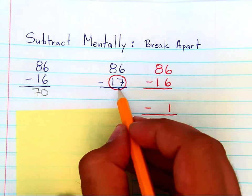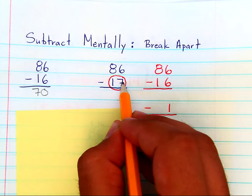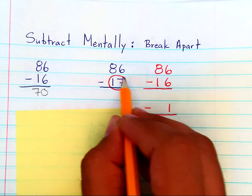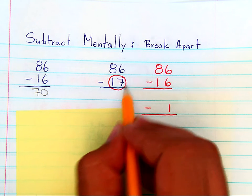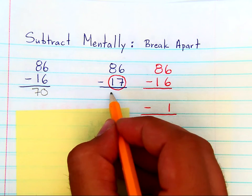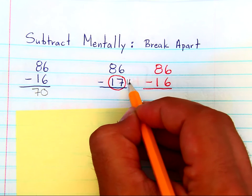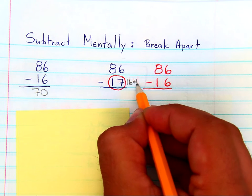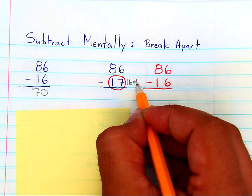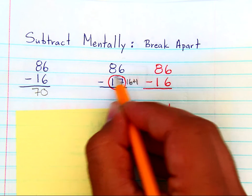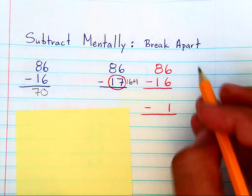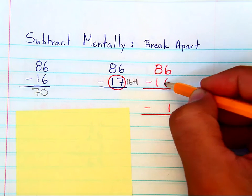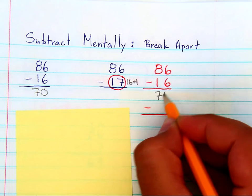But consider the number 17. If you start to see numbers as things that can be broken apart, then 17 isn't really 17. You can see it as 16 and 1. If you see this number 17 as a 16 plus 1, then you can subtract the 16 very easily in your head.